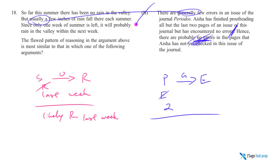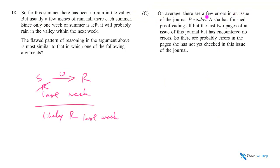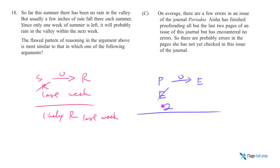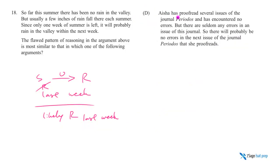Answer C says on average there are a few errors in an issue of journal P — 'on average' matches 'usually,' so there are usually errors. She's finished proofreading all but the last two pages and found no errors so far. The setup matches perfectly. The conclusion needs to say likely there will be errors in the last two pages — and indeed C concludes there are probably errors in the pages she has not yet checked. C is our right answer.